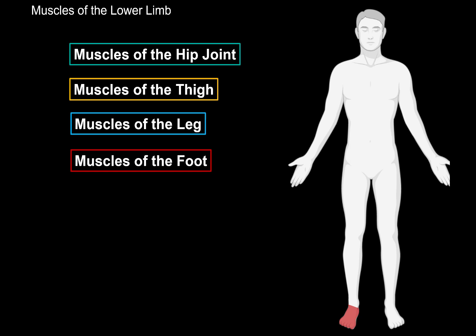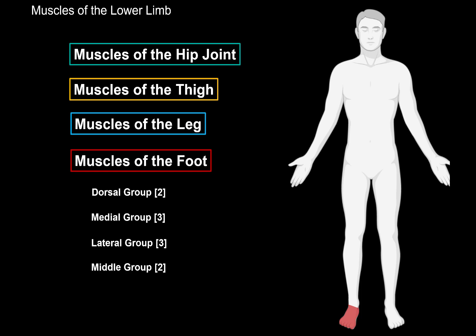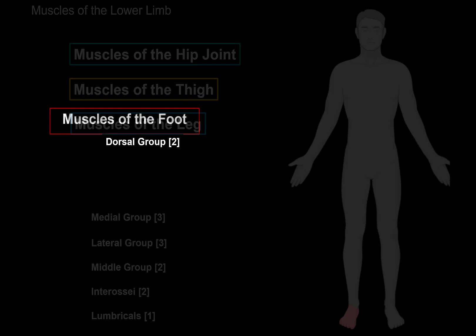The muscles of the foot are divided into several groups based on their anatomical location. First, we have the dorsal group consisting of two muscles, then the medial group of three muscles, the lateral group of three muscles, and the middle group of two muscles. Then between the metatarsals there are the interossei muscles — both dorsal and plantar — and the lumbricals. We're going to cover all of these, starting with the dorsal group.